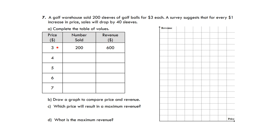So originally, if we started at $3, we would sell 200, and you just take those two numbers, multiply them to get the revenue, which is $600.